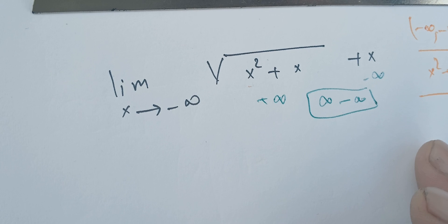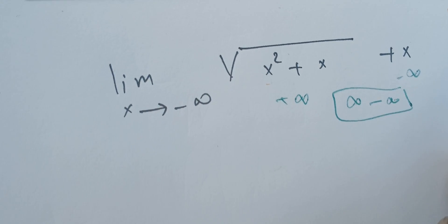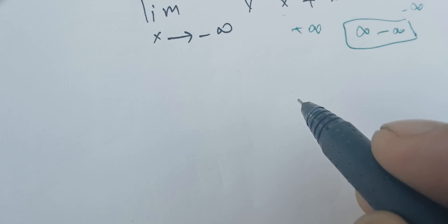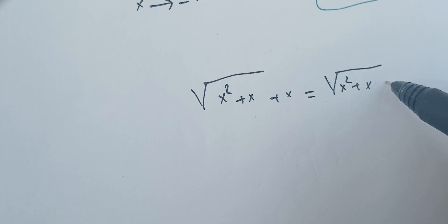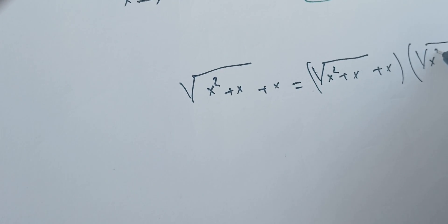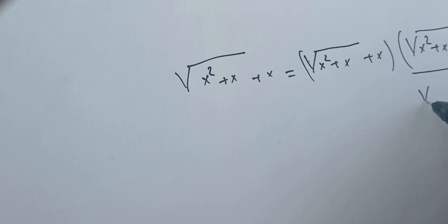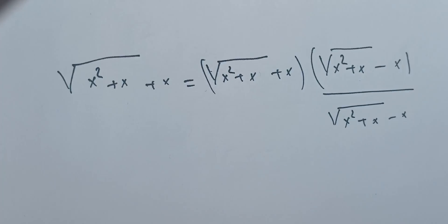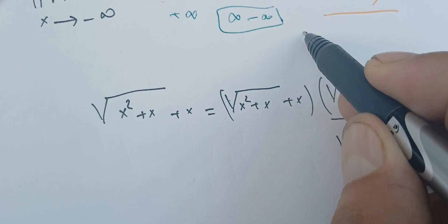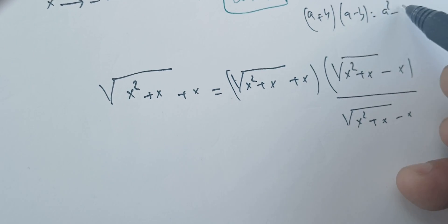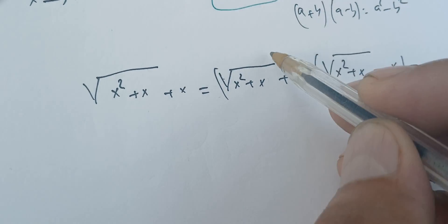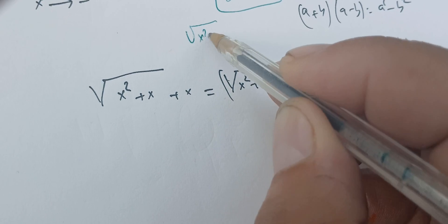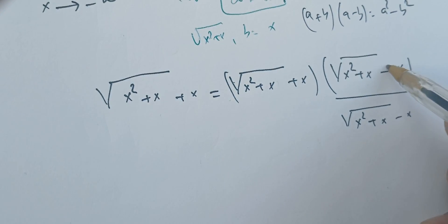One quick way to solve these issues when we have a square root is to multiply by the conjugate. So we take the square root of x squared plus x, plus x, and multiply by the conjugate: square root of x squared plus x minus x, divided by that same conjugate. Using the fact that (a + b)(a - b) = a² - b², where in our case a is the square root of x squared plus x, and b is just x.